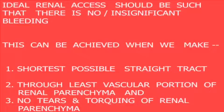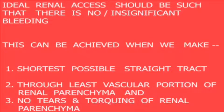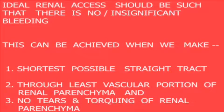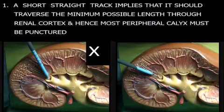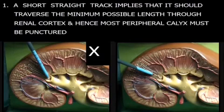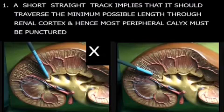Our ideal renal access should be such that there is no bleeding or insignificant bleeding. This can be achieved when we make the shortest possible straight track through the least vascular portion of the renal parenchyma. We should not produce any tear or torque during stone removal. A short straight track implies traversing the minimum possible length through the renal cortex, and hence the most peripheral calyx must be punctured.